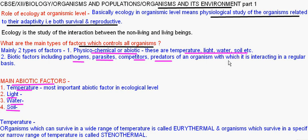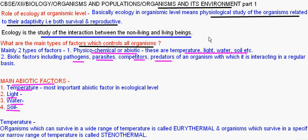Organisms and Population. In this we are going to discuss the role of ecology at the organismic level. Ecology is the study of the interaction between living and non-living things. Ecology is basically involved in 4 levels of living beings: organismic, population, communities, and biomes.